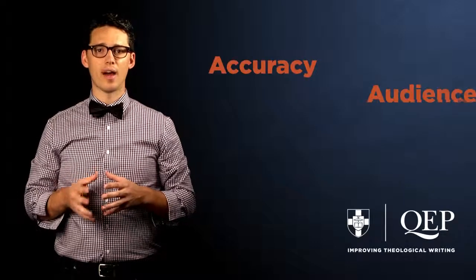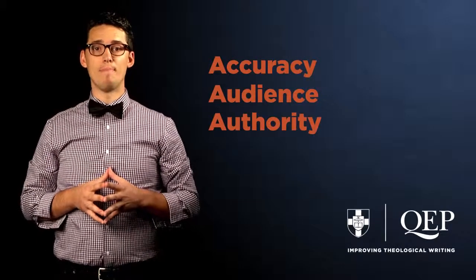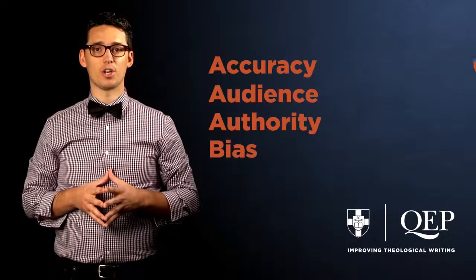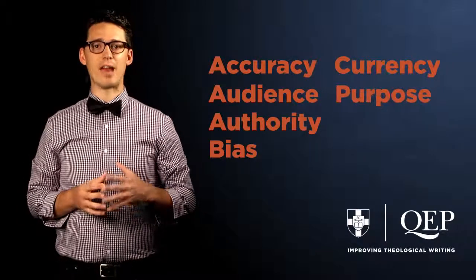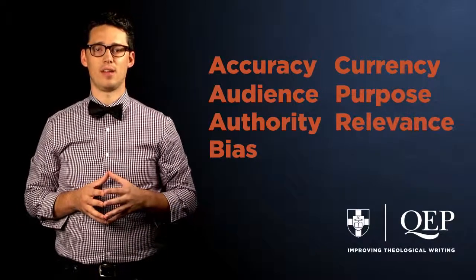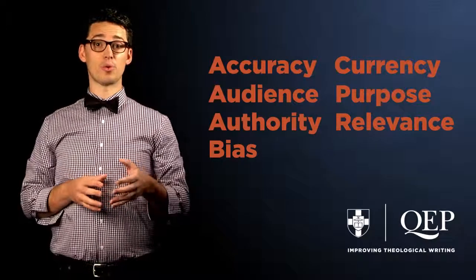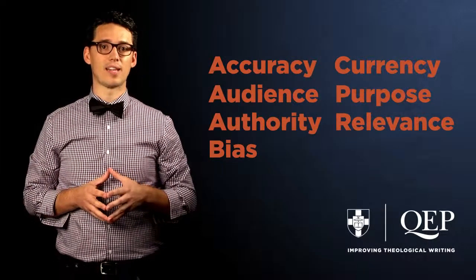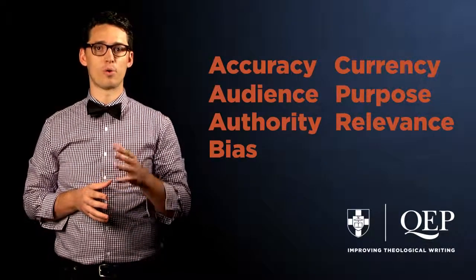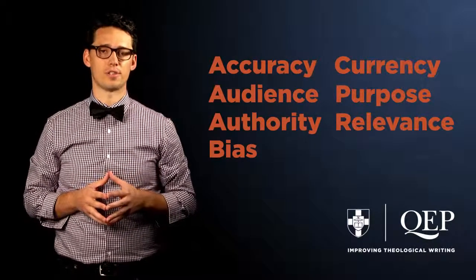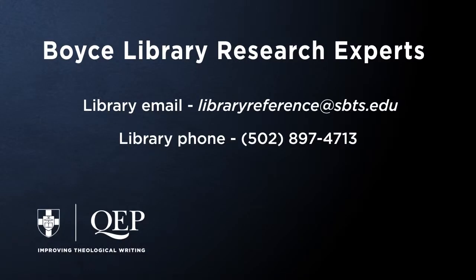Accuracy, audience, authority, bias, currency, purpose, and relevance. By thinking carefully about these seven factors, you can ensure that you will select high-quality resources for your research. If you have any questions about selecting resources for your research, please contact a Boyce librarian or one of their research experts.